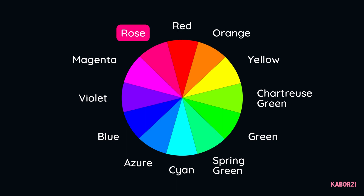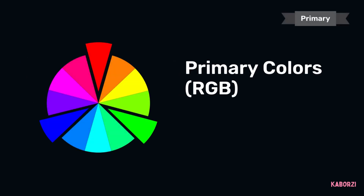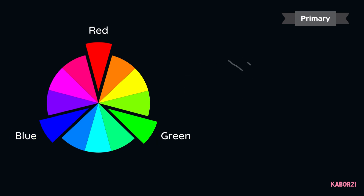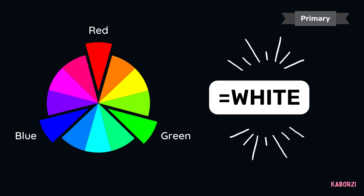Let's learn more about these colors by category and find out how they're created. We touched on this a bit in the first lesson, but it's worth repeating. In the RGB Color Wheel, the primary colors are red, green, and blue. When combined, these colors create white — hard to conceptualize, but it's true.